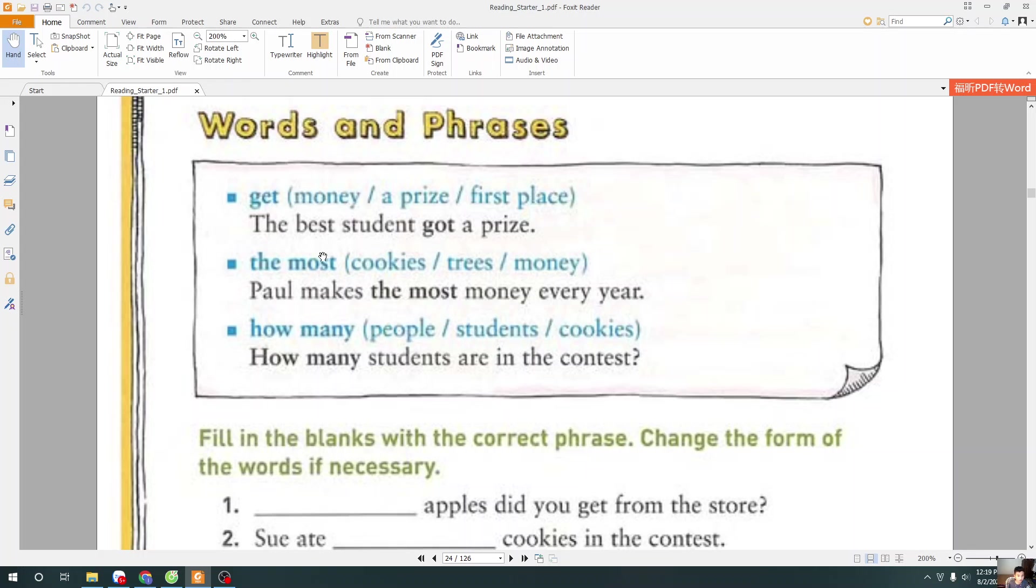In this exercise, first what is get? We get money or a prize or a first place. And second word is the most. The most cookies, the most treats or the most money. And how many? Third word is how many? How many people students and cookies?